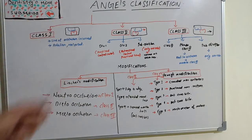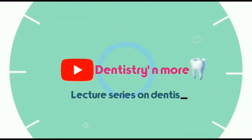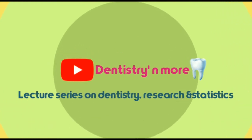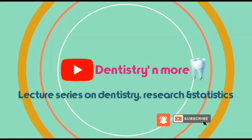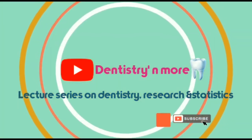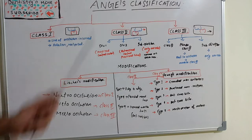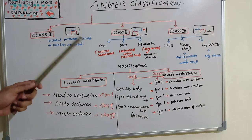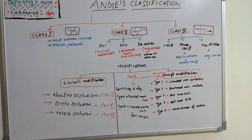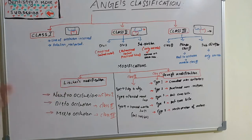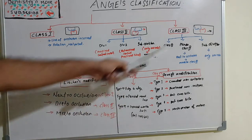Angle's classification is basically three types: Class 1, Class 2, and Class 3. Class 1 is basically normal occlusion. Class 2 is proclined or forwardly placed upper teeth, and Class 3 is forwardly placed lower teeth or a forward mandible.